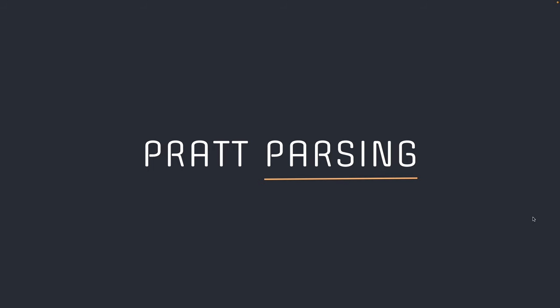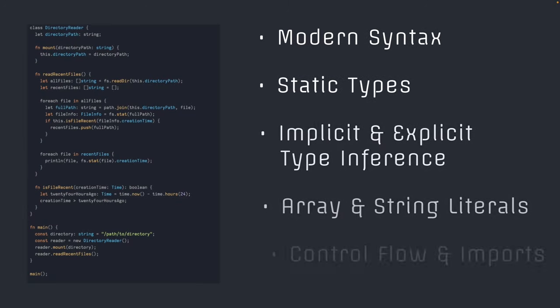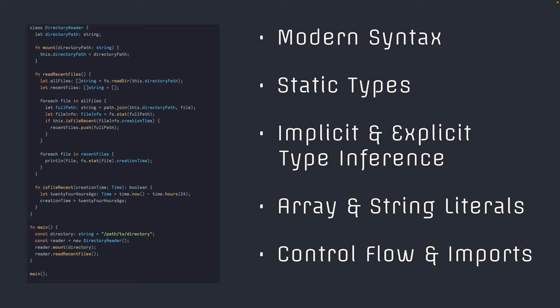It's been long requested and long awaited that I continue my interpreter series, but I figured I would actually focus on writing parsers. So in this series, we're going to be writing a parser for a syntax like the one you see right here. The syntax is pretty modern. It includes object-oriented principles, classes, static types, implicit and explicit types, meaning there will be type inference. It'll include array and string literals, as well as common control flow patterns like if, for each, and switch statements, and it'll include imports. All of these combined will give you an idea of how to parse basically any syntax that you want to come across or that you want to create.